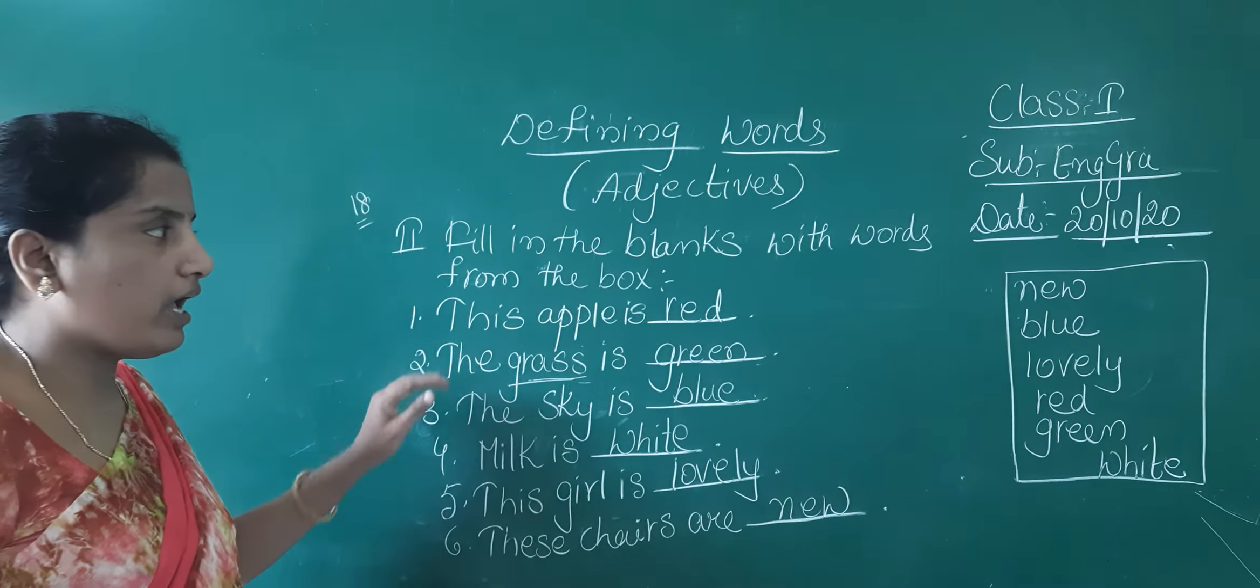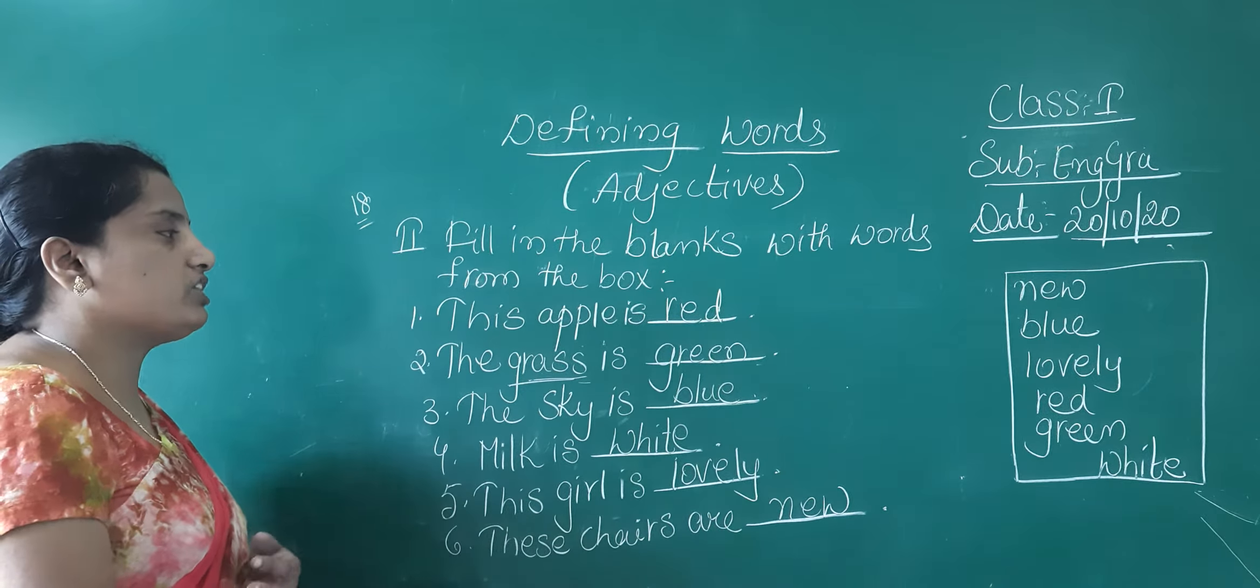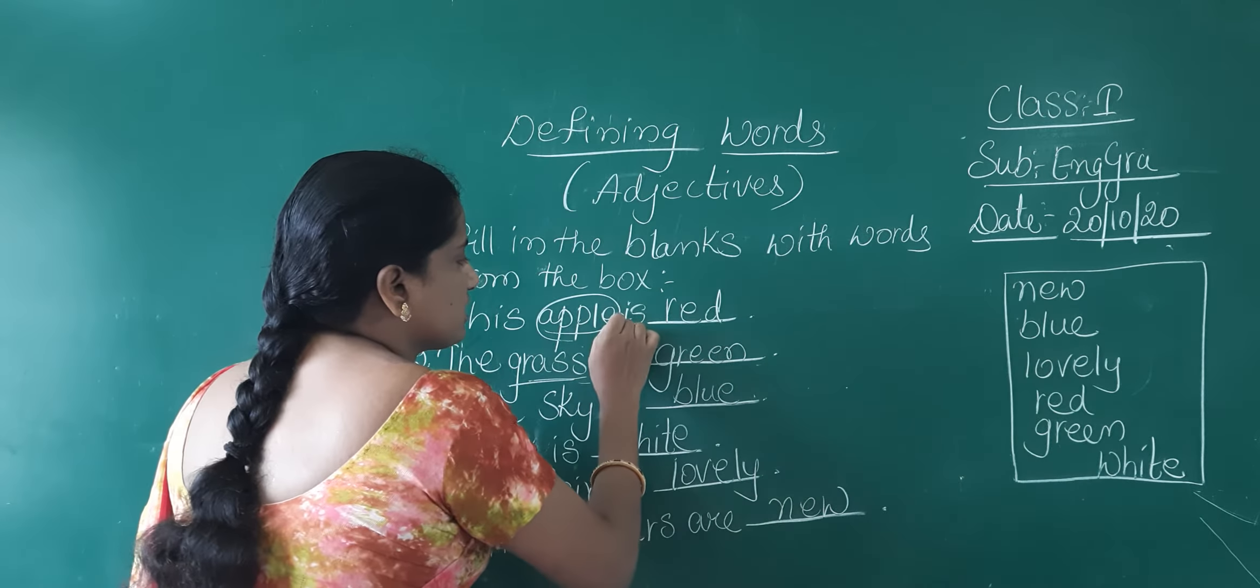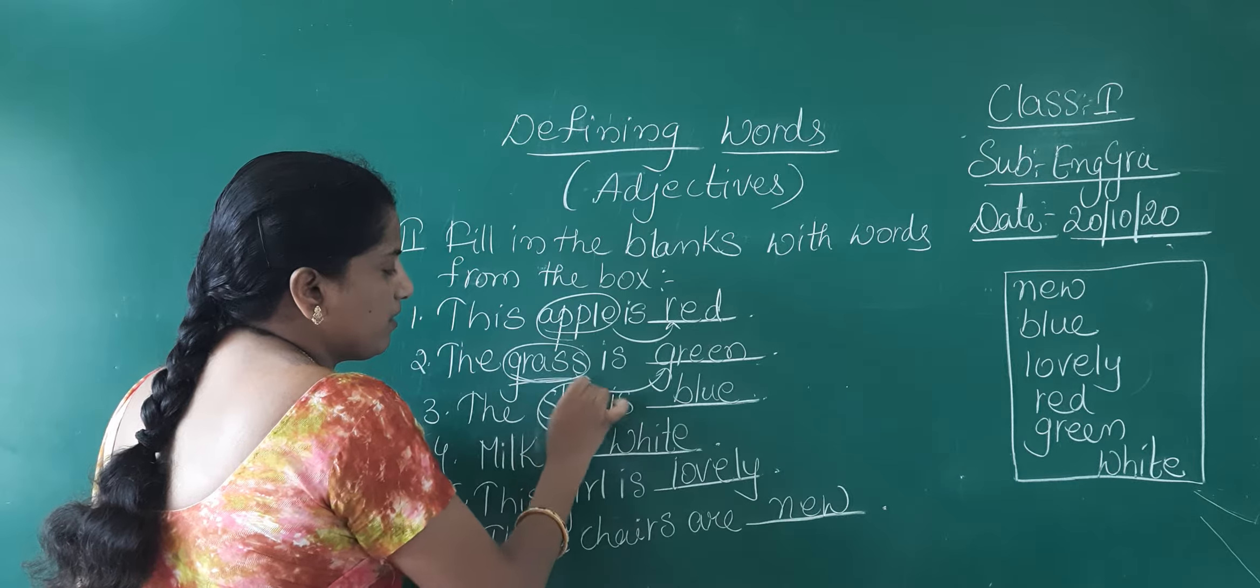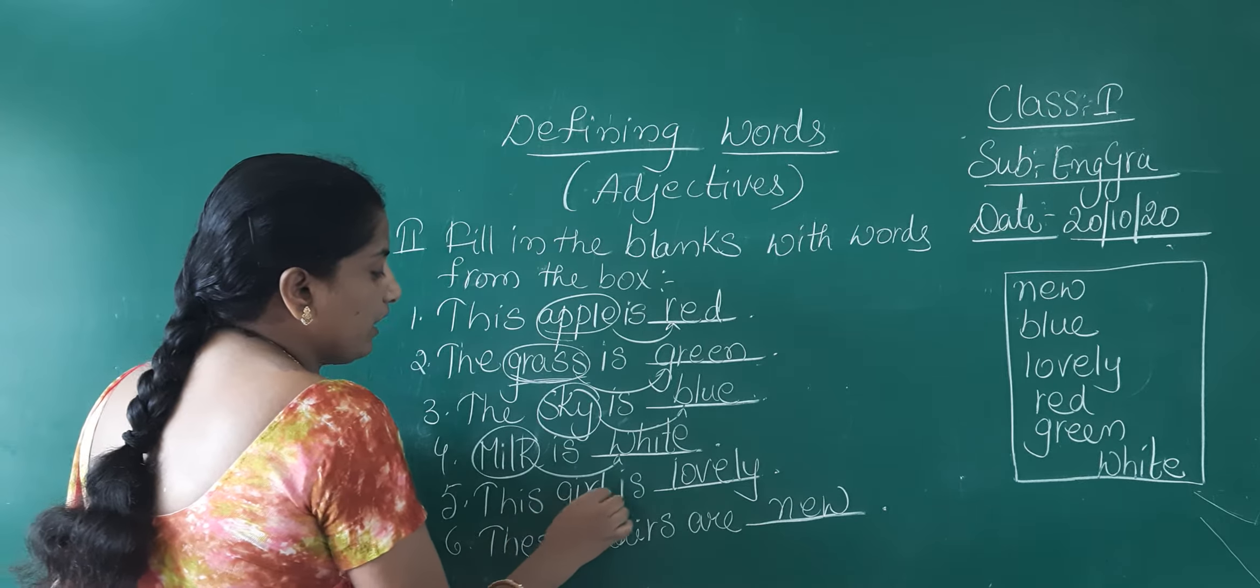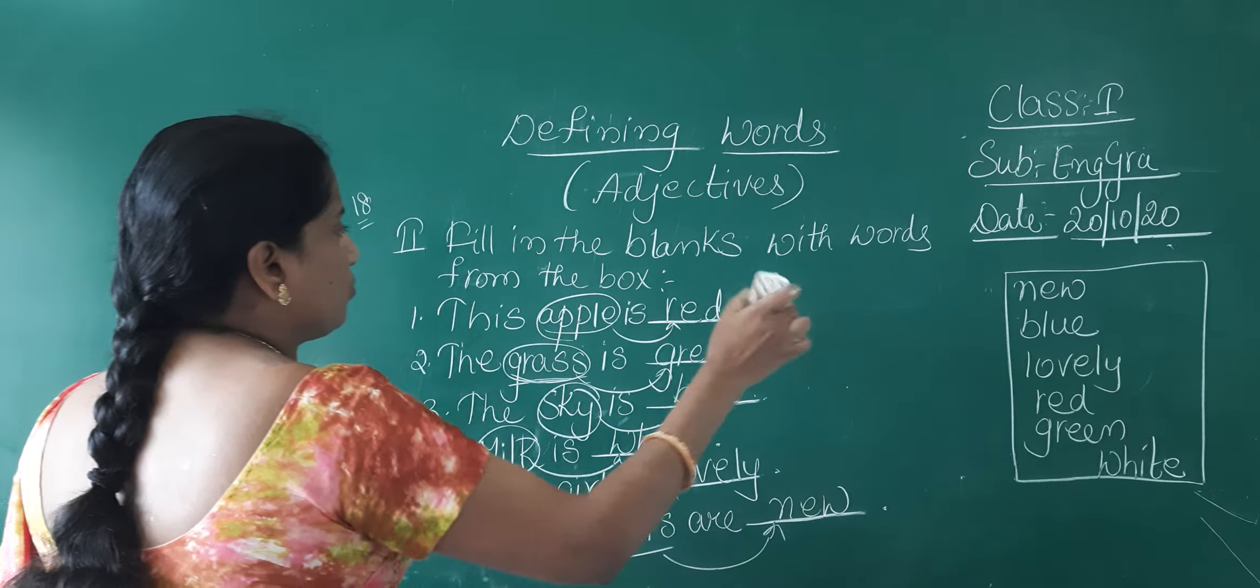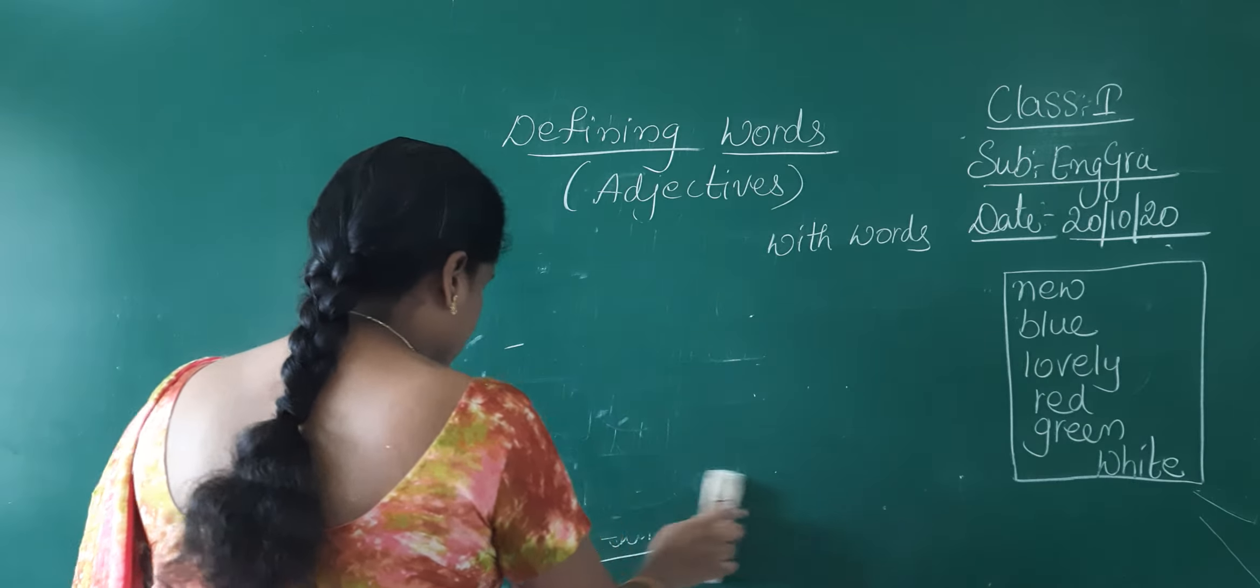So from the box, I have used a suitable word for each and every blank. If you observe children, this apple is red, the grass is green. For the apple, the quality out of these words is red. Only red is the suitable word. For the grass, green. For the sky, blue. And for the milk, milk can be white. There is lovely. Chairs are new. In this way, we have completed the blanks with the suitable word from the box.